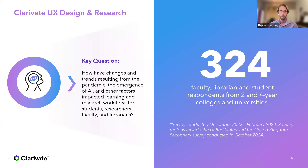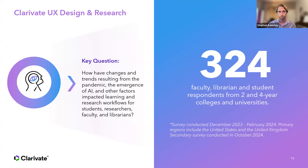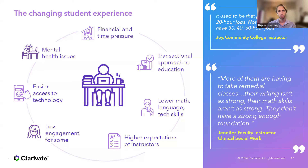This year, our user experience team has been trying to answer a big question: how have some of the momentous changes of the past several years — the pandemic, AI, and many other factors — affected the experience of students, faculty, librarians, and higher education? To that end, we contacted over 300 people, had about 40 interviews and the rest were surveys. I'm going to cover some of the key findings. Before getting into findings specific to AI, I'd like to step back and talk about some broader findings to paint a picture of the environment in which AI arose.